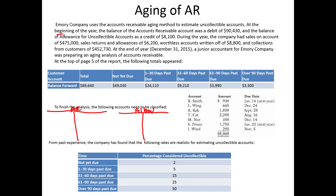At the beginning of the year, the balance in accounts receivable was $90,430 — that was the beginning balance. The balance in the allowance account was a credit of $8,100, which represents the estimate of receivables that we think are not going to be paid. To get the net realizable value, we subtract the allowance balance from the accounts receivable balance.